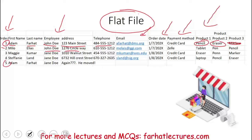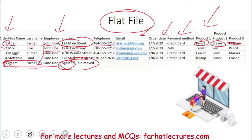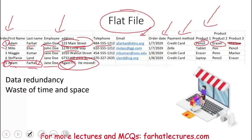Then Adam Farhat came back and wanted to buy more items from the store. Notice we have to put Adam Farhat's name again. But Adam moved, so we have to change his address. Are we going to change his address only here in this file, or go back and change his records everywhere his name appears? And this could be a different Adam Farhat altogether. As the company grows with more and more sales, it's going to be a lot of data redundancy — a waste of time, a waste of space, and the Excel sheet will get really complex and hard to retrieve information from.